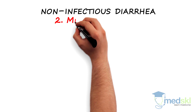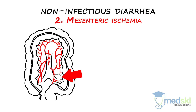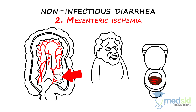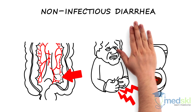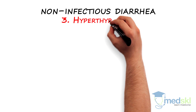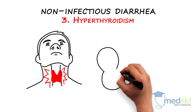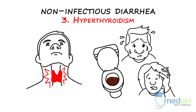Second, think about mesenteric ischemia in an elderly patient with bloody diarrhea and severe abdominal pain out of proportion to physical findings. Third, think about hyperthyroidism in a patient with diarrhea, heat intolerance, and anxiety.